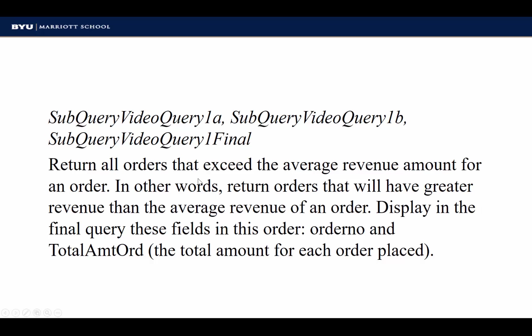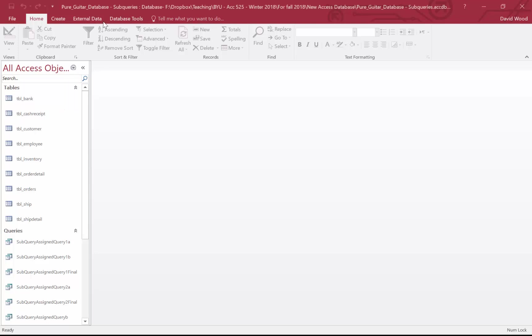Let's think about this. The first query I need to run: I need to return all orders that exceed the average revenue amount. To get the revenue for an order, I need to compute a query, because right now the revenue is recorded at the transaction level for different items on each order. So first I get the amount for each order. The second query computes the average for all of those orders. And finally, the third compares them and returns what the question asks.